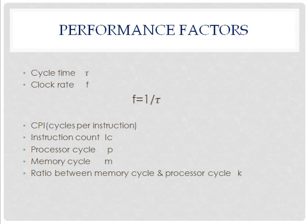These are the factors affecting the performance of the system. They include cycle time, represented as TOR; clock rate F, represented as 1/TOR, that is the inverse of cycle time; and CPI, meaning cycles per instruction. Next is instruction count.